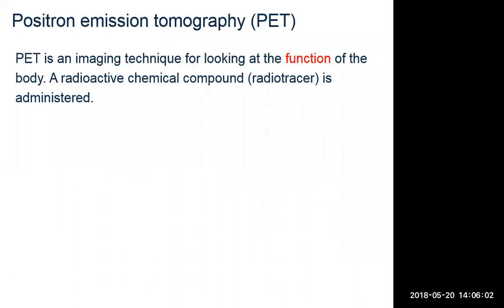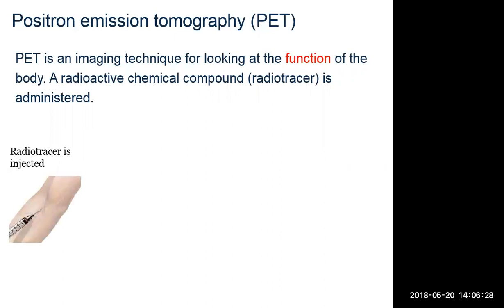Basics of positron emission tomography: it's fundamentally a functional imaging technique rather than an anatomical imaging technique. Obviously you can do functional imaging with MR as well, but PET is all about looking at the function of the body, and that is achieved by using a radioactive chemical compound called a radiotracer that is typically injected intravenously. The most common choice in PET is fluorodeoxyglucose; we'll come to that molecule in a moment on the next slides.